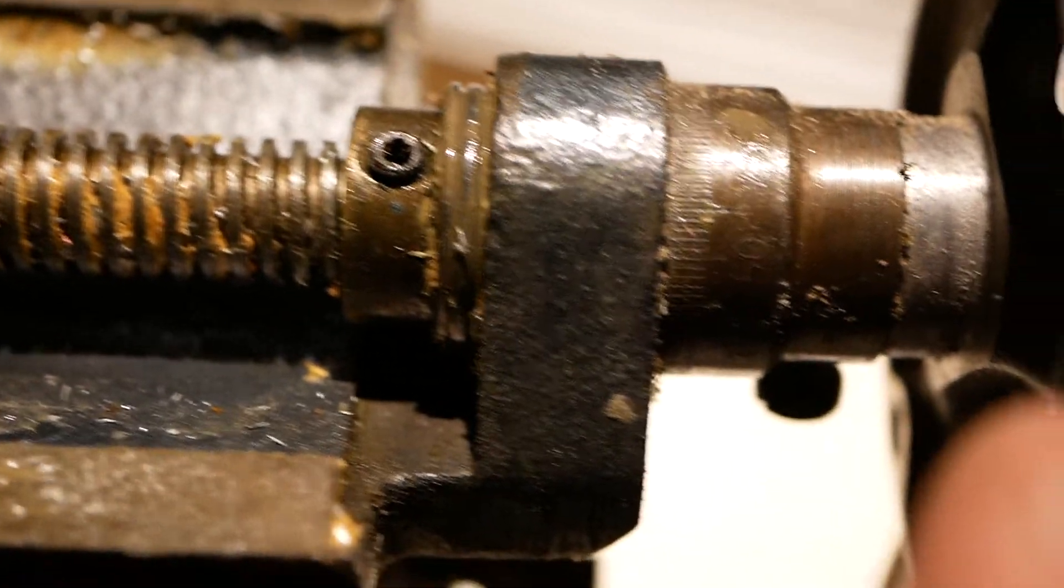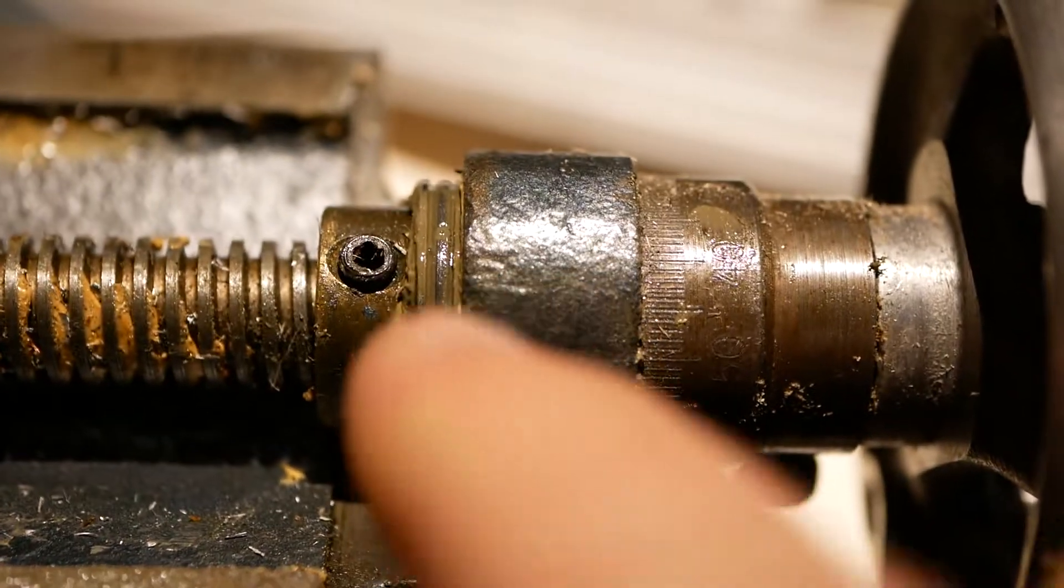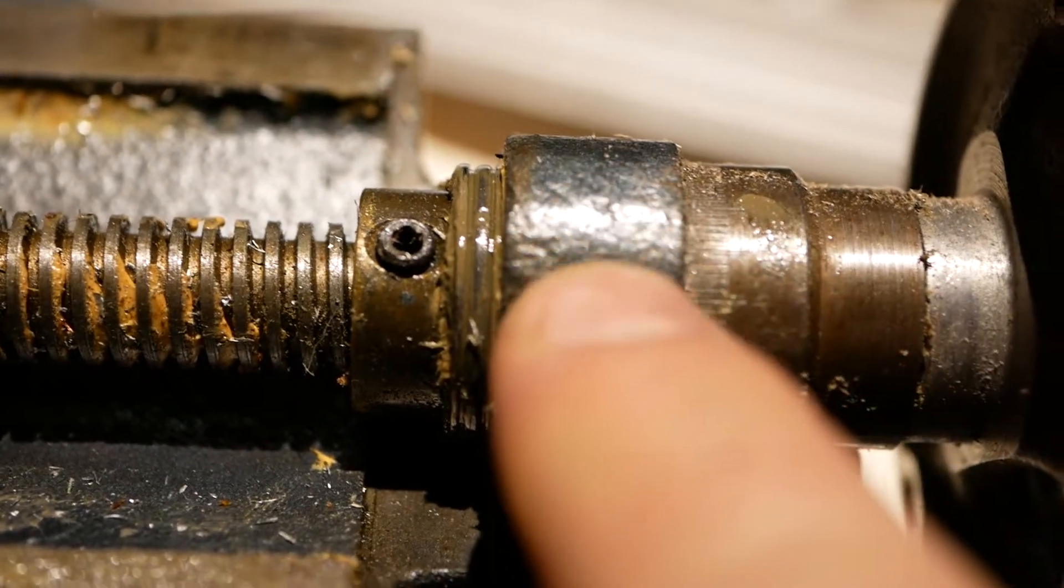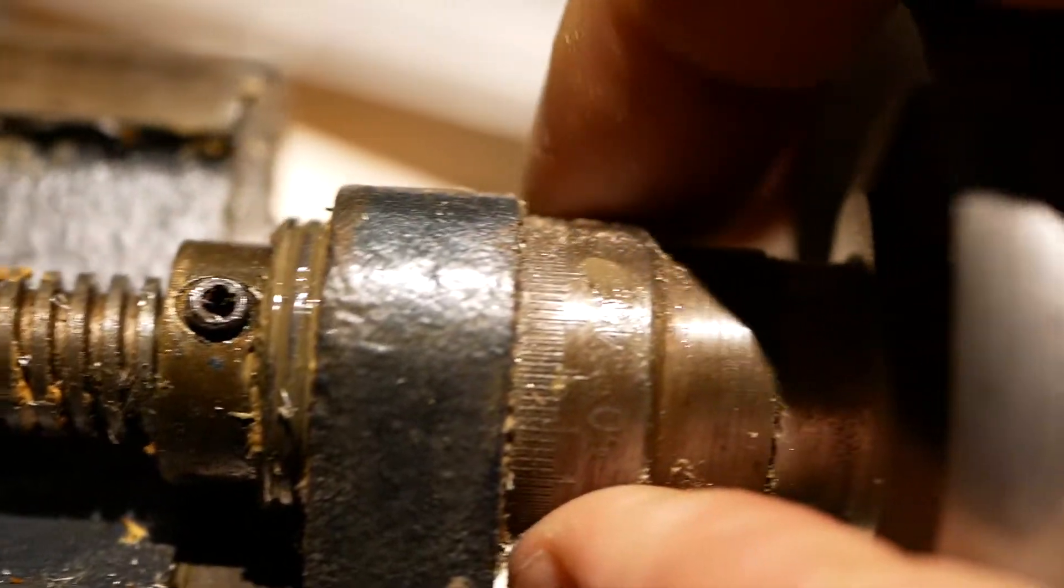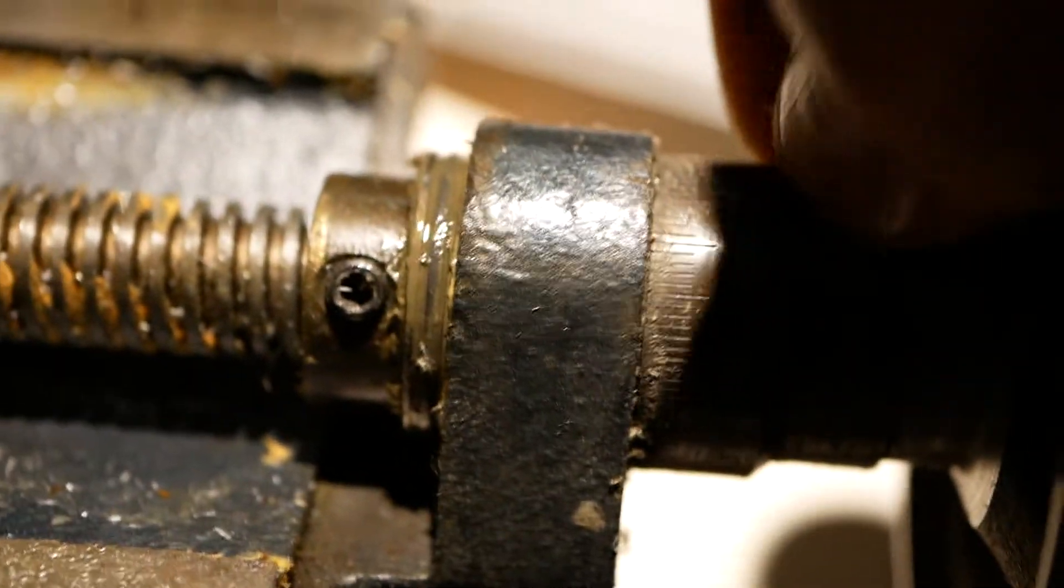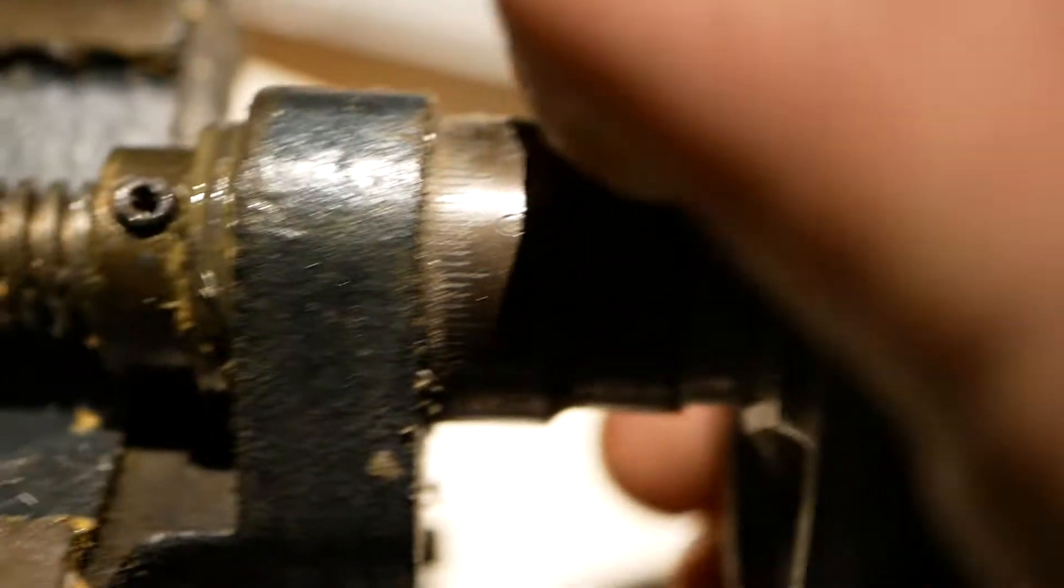The chinesium way, the shitty way, is none of this stuff on that side of the cast iron even exists. Instead you have a thing that looks like this increment ring with that screw on there loose. It spins right on around, no problem.